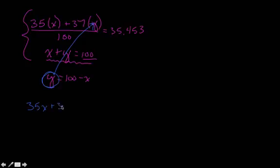35x plus 37 times (100 minus x) all over 100 is going to be equal to 35.453. And what I've accomplished here is I've now gotten one equation and one unknown. At this stage in the game, it's really just a little algebraic manipulation in order to isolate the variable x and see what it's actually solved for.